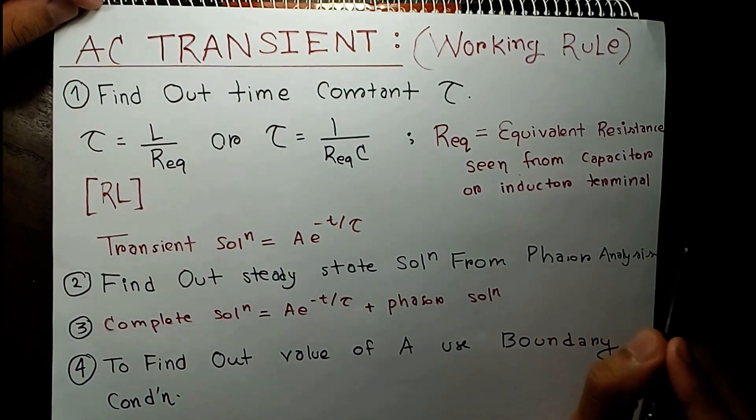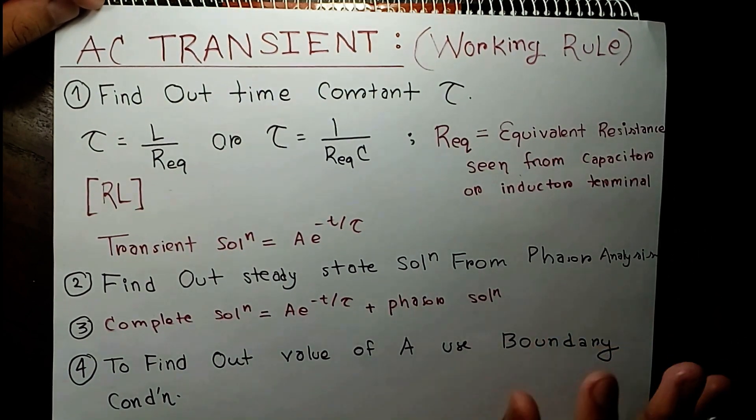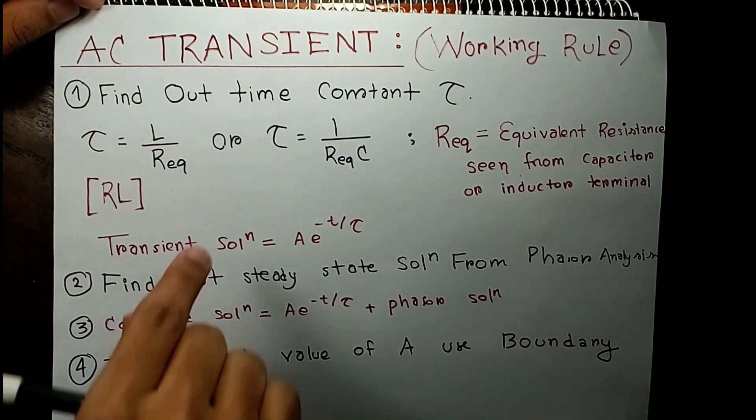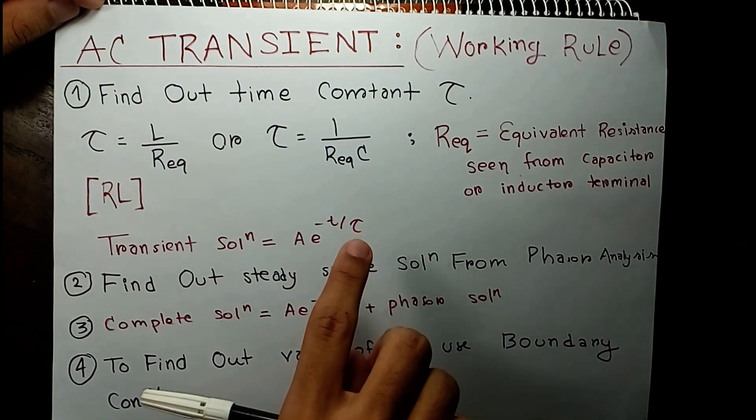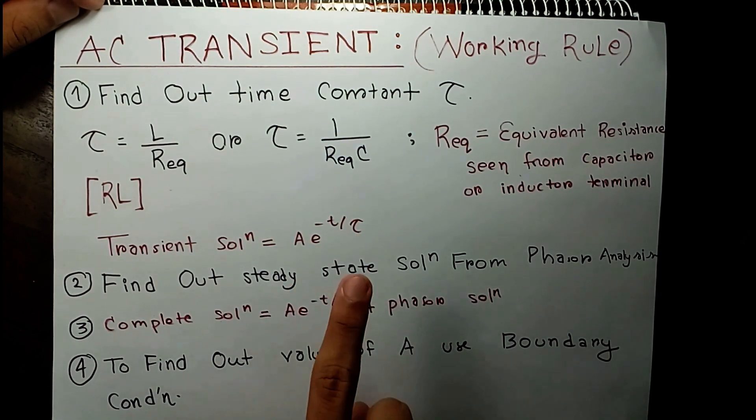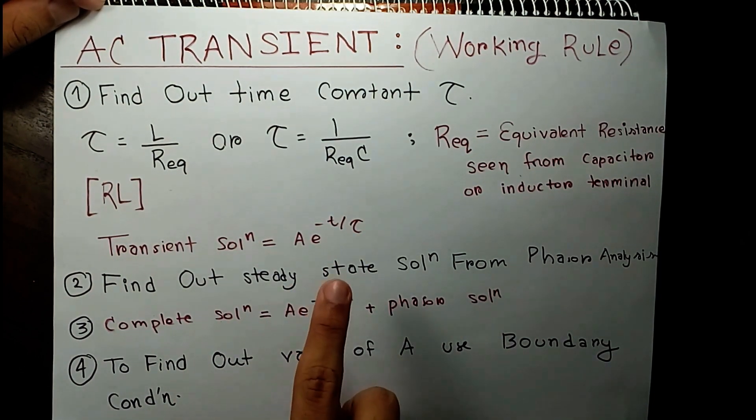I will go through this in the examples. Assign your transient solution to A times e^(-t/tau). This will be your transient solution. It comes immediately from solving the differential equations.